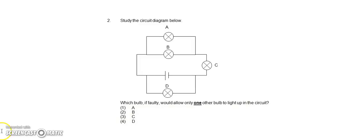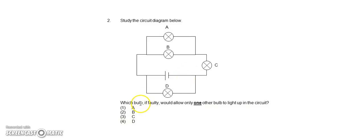Okay, now let's take a look at question 2. Study the circuit diagram below. The diagram includes four bulbs A, B, C and D and one battery in the middle. They are arranged in a parallel position. The question is: which bulb, if faulty, would allow only one other bulb to light up in the circuit?